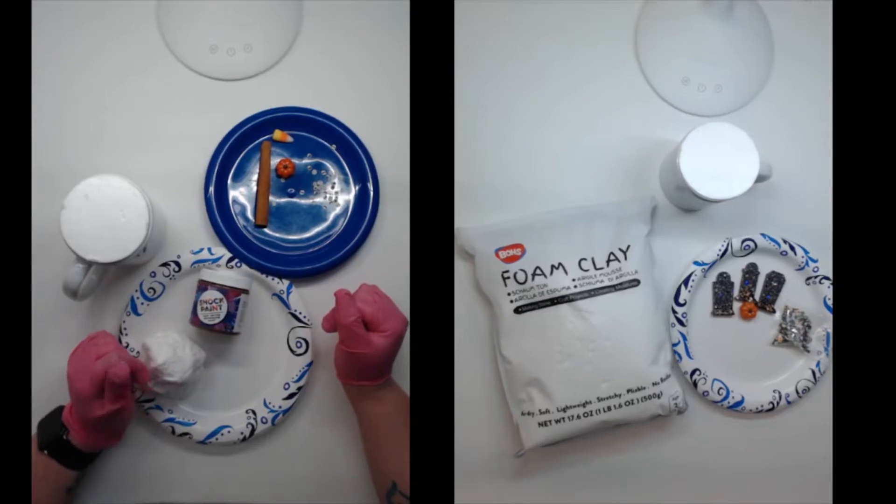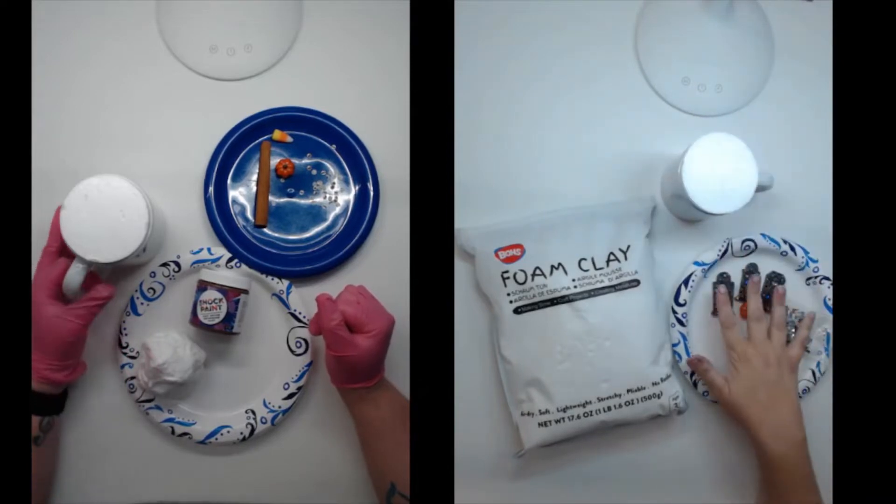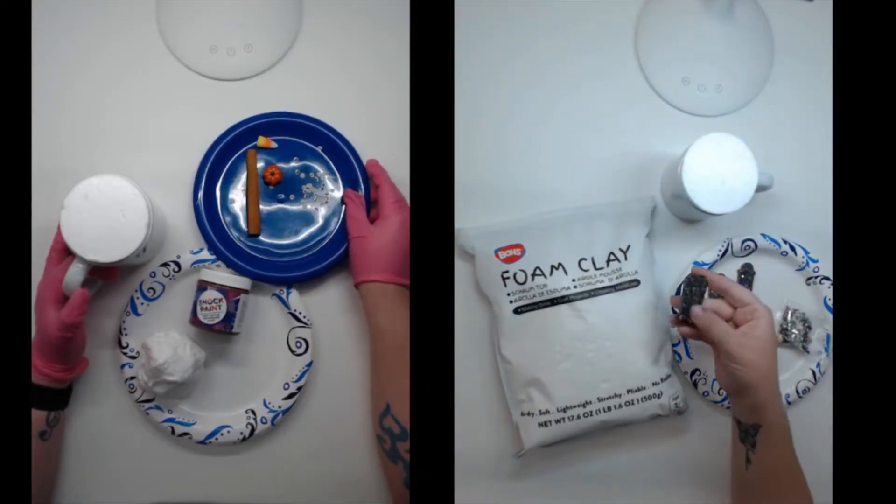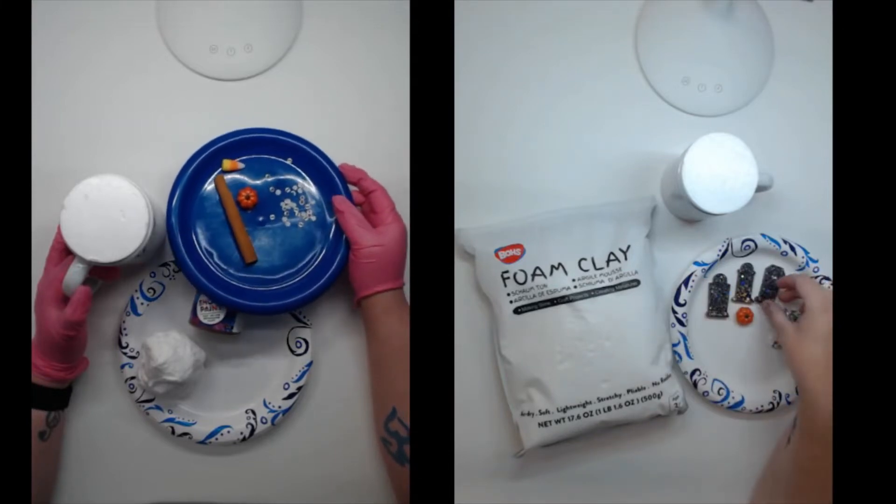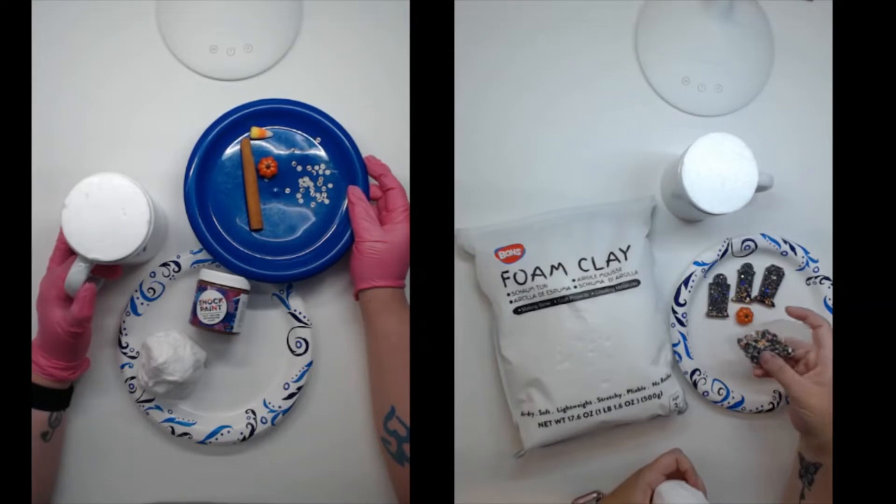Alright, so today we're going to be using the foam clay to make a cup topper and we've got some little pieces and bits here, pumpkins and some resin pieces that I made with a mold at home and then just some little fun clay bits here.